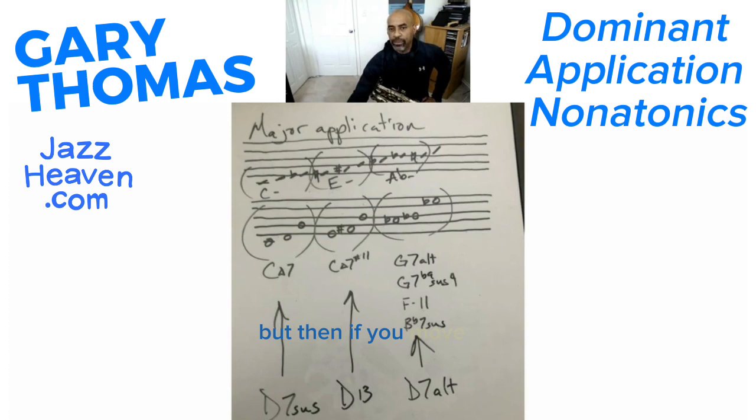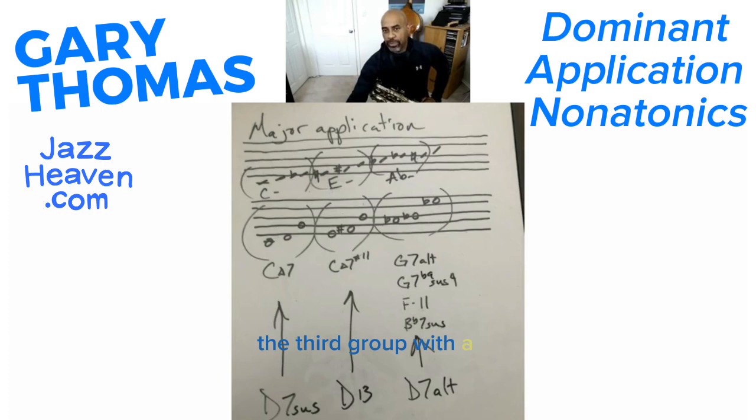If you move to the next set of parentheses, you have E, F sharp, and B, which I call a C major 7 sharp 11 without the other tones. And then this third group with the A flat, B flat, and E flat — I see that as a G7 alt.